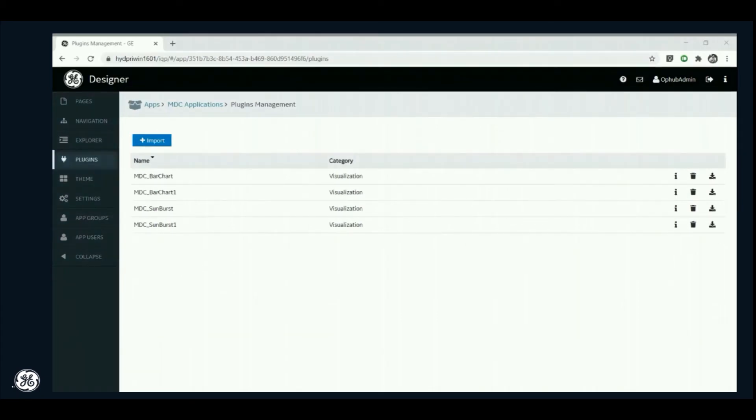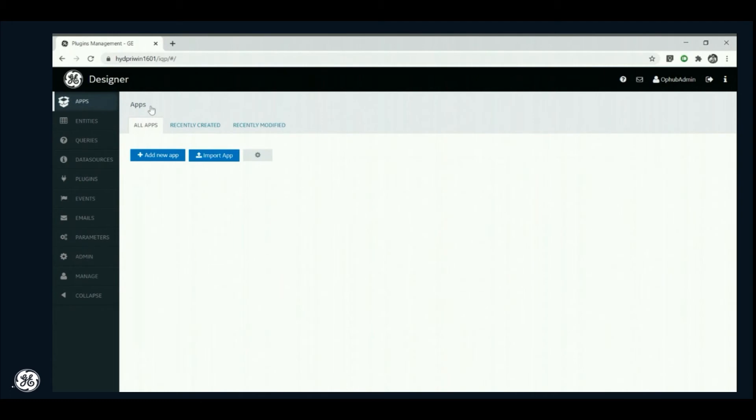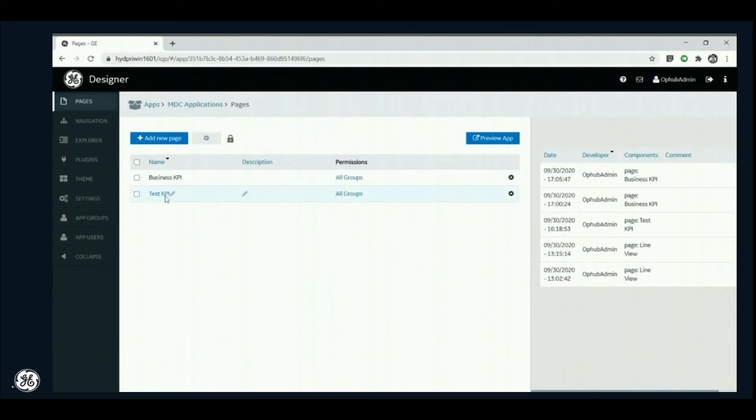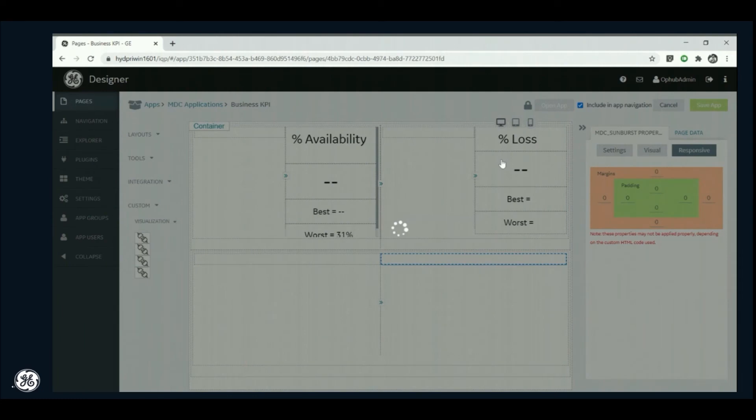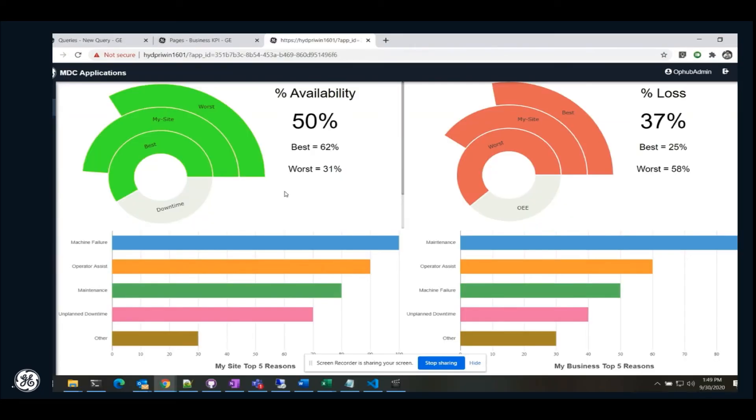Then I would select an app under MDC applications. Select a suitable layout, then drag and drop the plugins. Later on, I would make association of page data to the data source that we created in our previous step. So here it is, we have created our first app using MDC data.